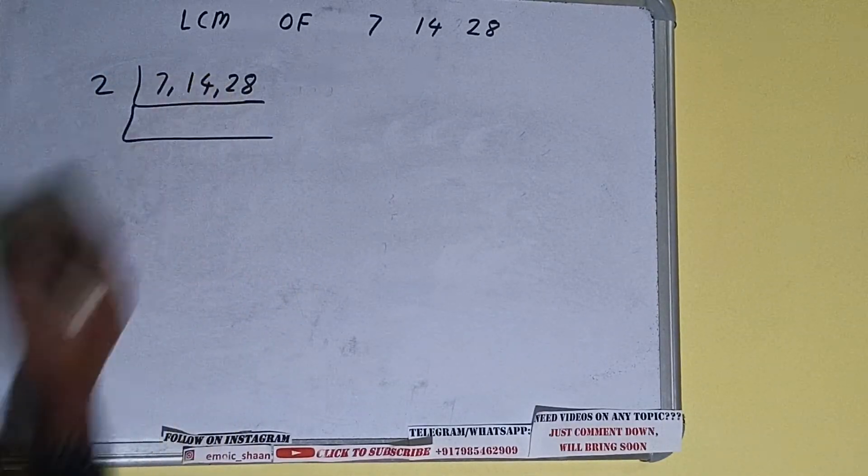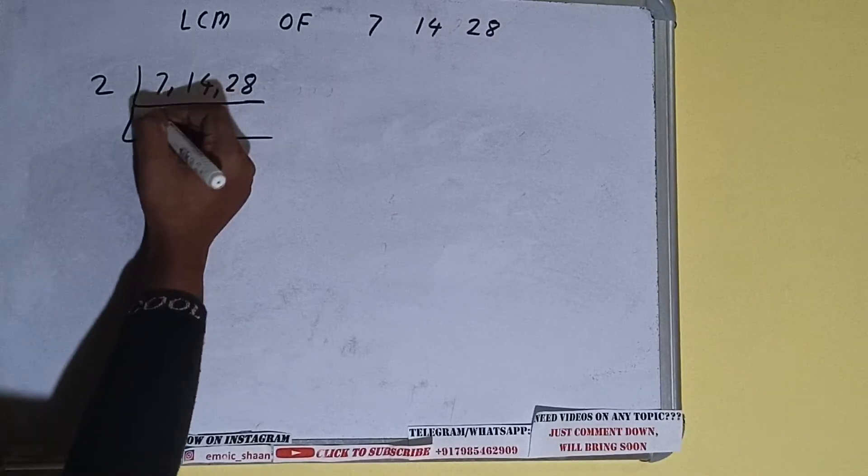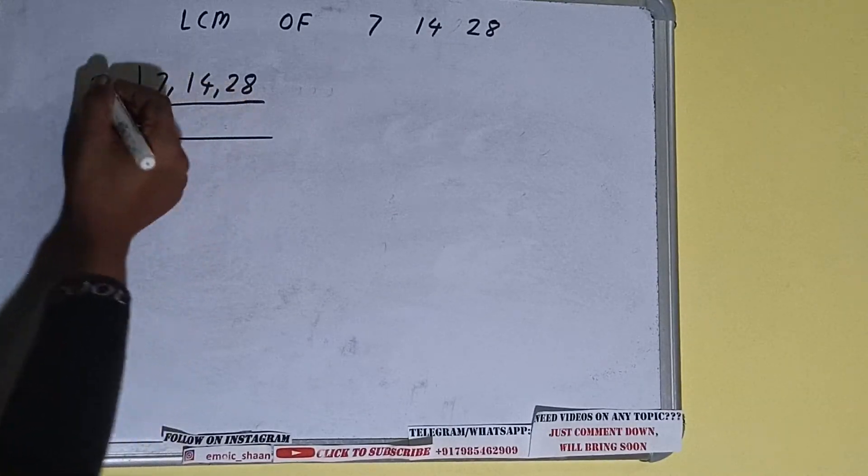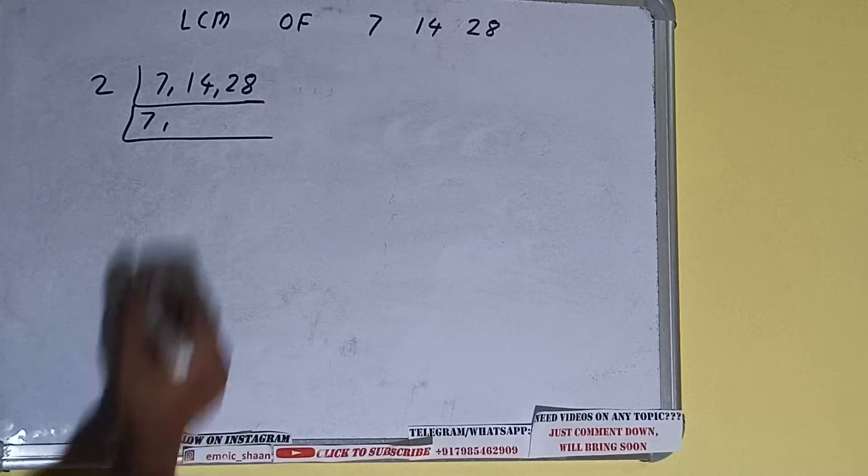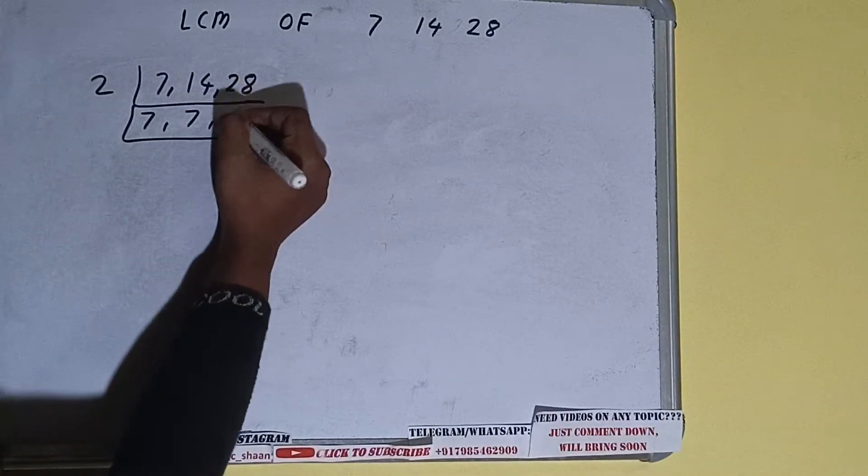The first number that is 7 is not divisible by 2, so we'll just copy it down. The second number 14 is divisible by 2, so we'll divide and it will become 7. The third number on dividing will become 14.